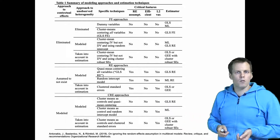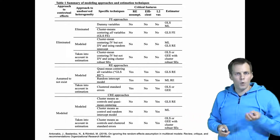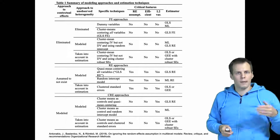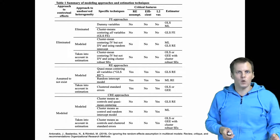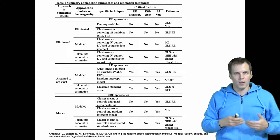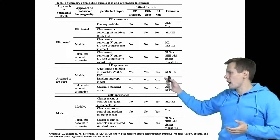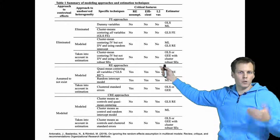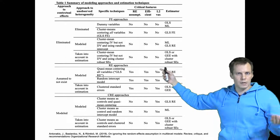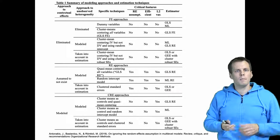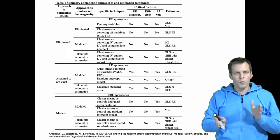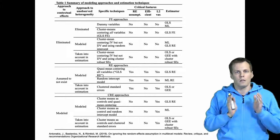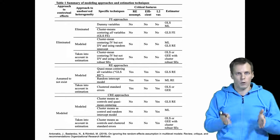Another thing you need to consider is what is your approach to unobserved heterogeneity. Do you want to eliminate it from the data? Do you want to model it and include it in your model, or do you want to take unobserved heterogeneity into account during the estimation? The more important of these two is the contextual effect, or the random effects assumption.